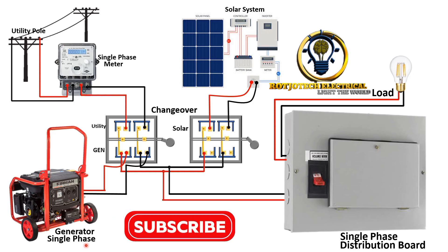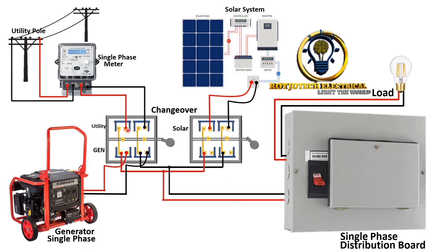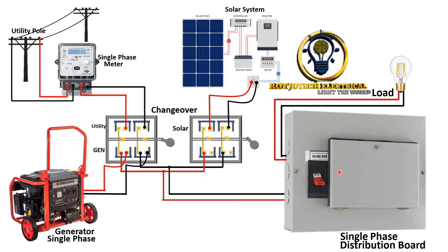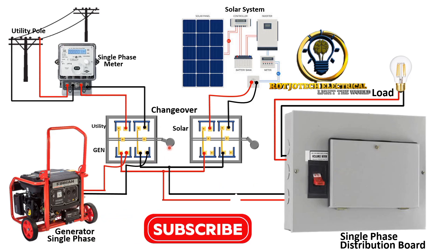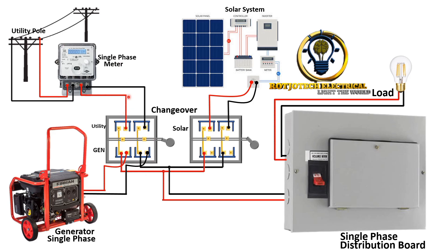The most important thing to be conscious of in this connection is this: when you are using one changeover switch, the other must be on neutral — meaning it is not connected to any side. For example, if you want to use this changeover switch for utility or generator, the other must be in the middle, not connected to solar. Because if the solar changeover is switched on and you also switch this one to utility or generator, you are connecting two power sources together, and it's going to be a disaster.